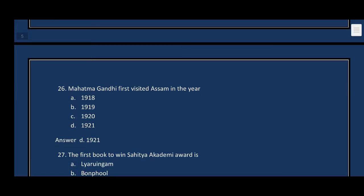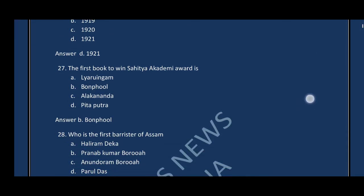Question number twenty-six: Mahatma Gandhi first visited Assam in which year? The correct answer is option D — 1921. Question number twenty-seven: The first book to win the Sahitya Akademi Award — the correct answer is option B, Banphool.